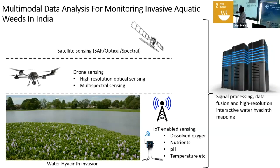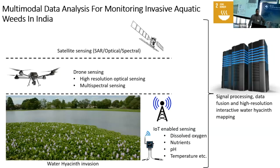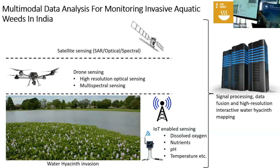On the satellite side, we used synthetic aperture radar (SAR), optical, and multispectral data. We also deployed ionized sensors on the ground to capture water quality data, since there is a direct relationship between water quality and the growth cycle of water hyacinth. Finally, we combined everything using TerraFusion and machine learning models, with the ultimate aim of creating an interactive map showing growth in targeted areas.